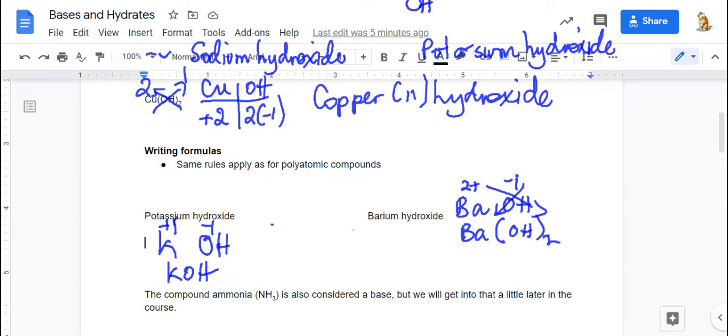If you were doing zero sum, your barium has a charge of two plus. Hydroxide has a charge of one negative. So you need two of these to make a total negative of negative two. So writing formulas for bases is quite similar to polyatomic compounds.